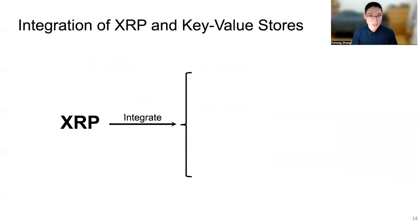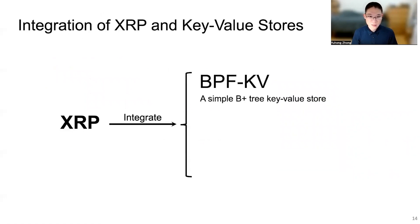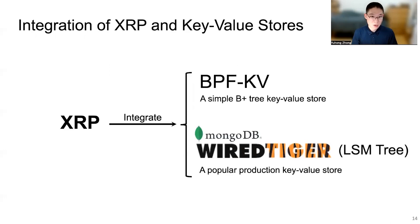We integrate XRP with two key-value stores. The first is BPFKV, a simple B+ tree key-value store we built to take advantage of fast storage devices and XRP, allowing us to test the performance limits of XRP. We also integrate XRP with WiredTiger's LSM tree. WiredTiger is a popular key-value store and is part of MongoDB. By integrating XRP with WiredTiger, we show that XRP can accelerate a production key-value store under YCSB workloads.